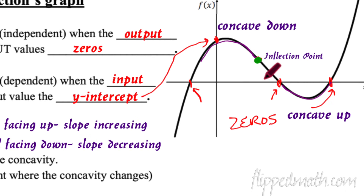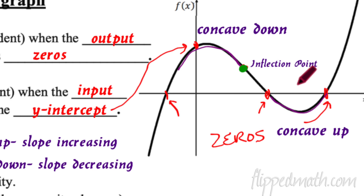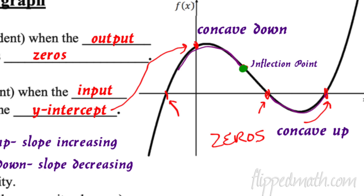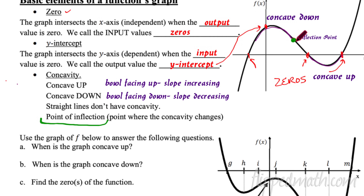We have one more thing called a point of inflection, also called the inflection point. Notice how a section is concave down — the slope is decreasing — but then it changes its mind and starts going the other way. That's the inflection point: where the slope stops decreasing and starts to increase. It's the point that divides the concave down and concave up sections — the point right in the middle.